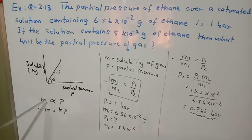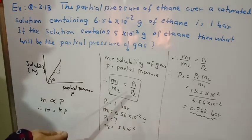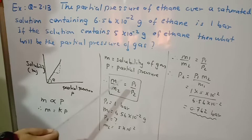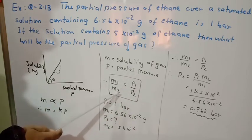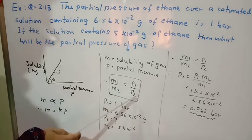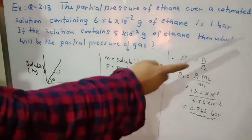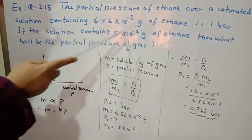Let m be the solubility. Since m is proportional to partial pressure P, we write m = kP, where k is a constant. For two different cases with different solubilities and pressures: m1/m2 = P1/P2. Here P1 = 1 bar is given, and m1 is the corresponding solubility in grams. Solubility is given in grams per given volume of solution.